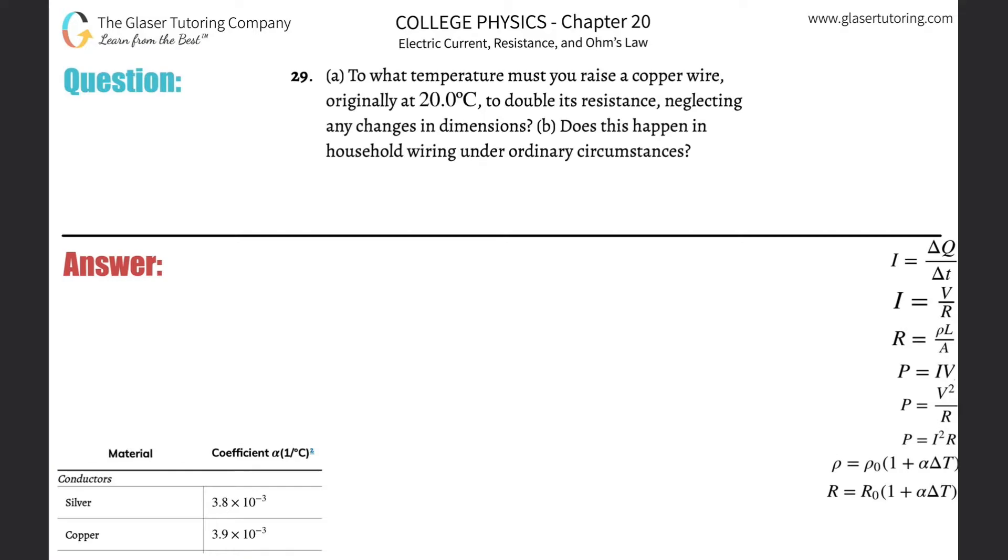Number 29, letter a: To what temperature must you raise a copper wire originally at 20 degrees Celsius to double its resistance, neglecting any changes in dimensions? Okay, let's first write down what we know. It says to what temperature must you raise the copper wire which was originally at 20 degrees Celsius, so they're basically asking us for the final temperature.